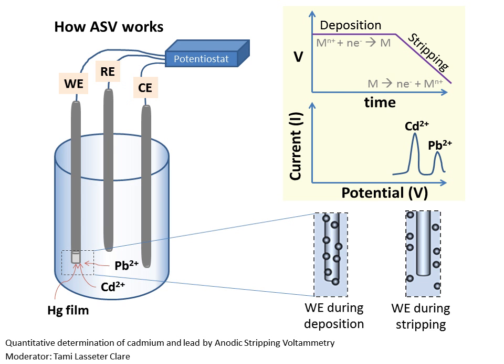Now on to the method. Anodic Stripping Voltammetry, or ASV, consists of two steps. The first step is the deposition step, where metals from your sample are deposited onto the electrode. The next step is the stripping part, where each type of metal or each different element is selectively removed from the electrode by oxidizing it, and then measuring the change in the potential of the solution.